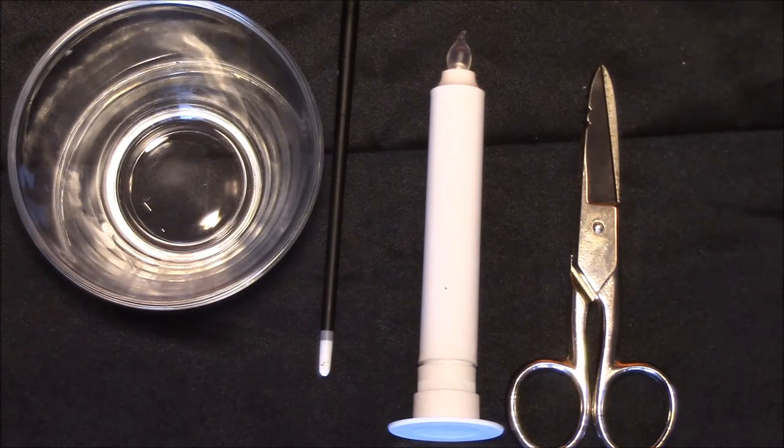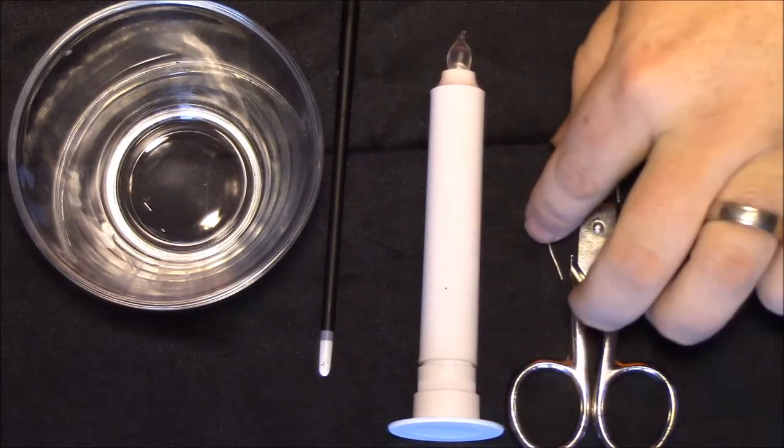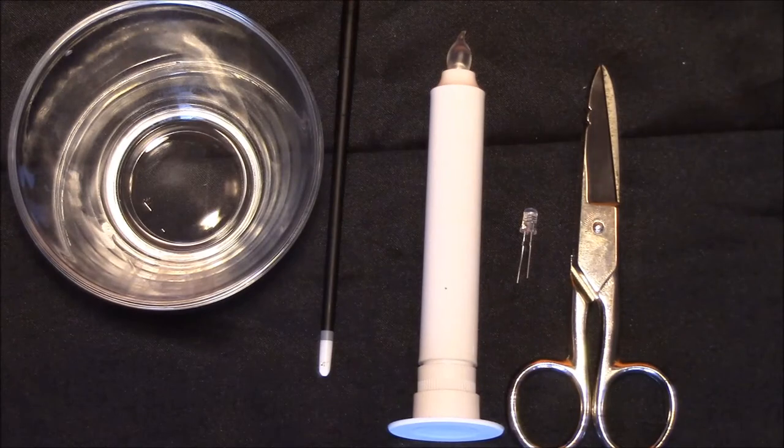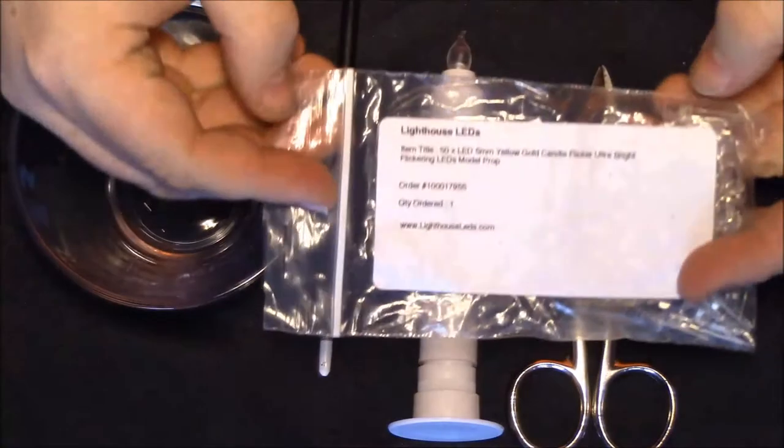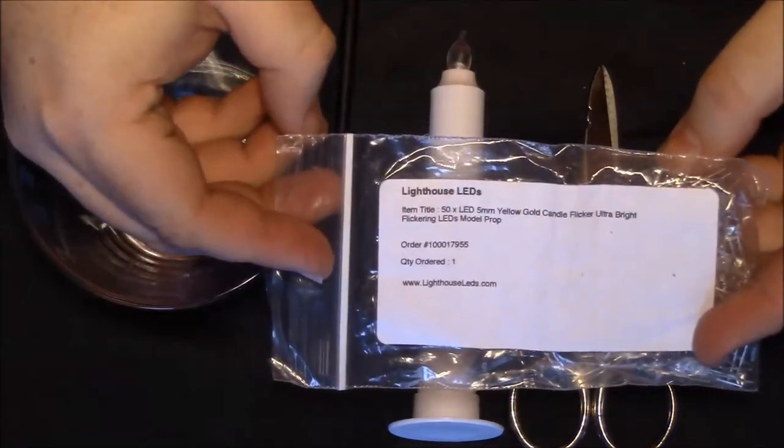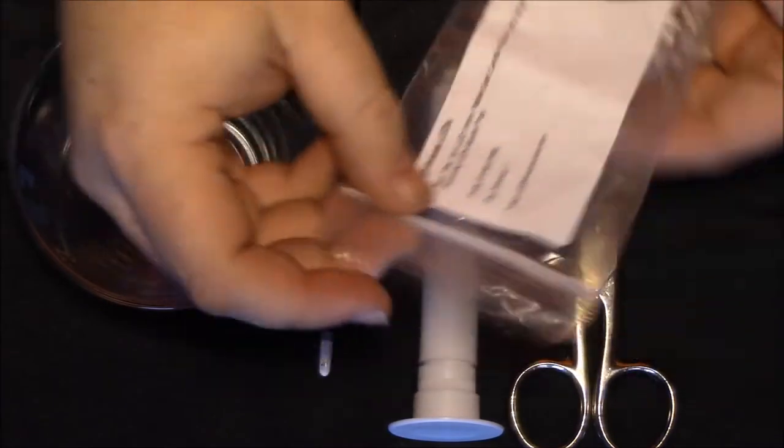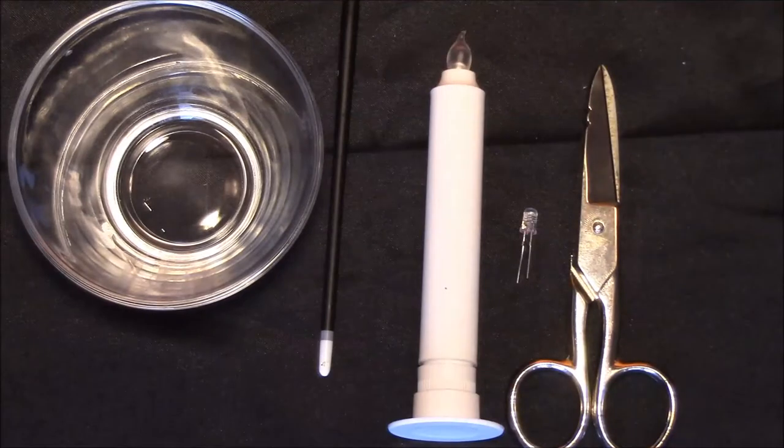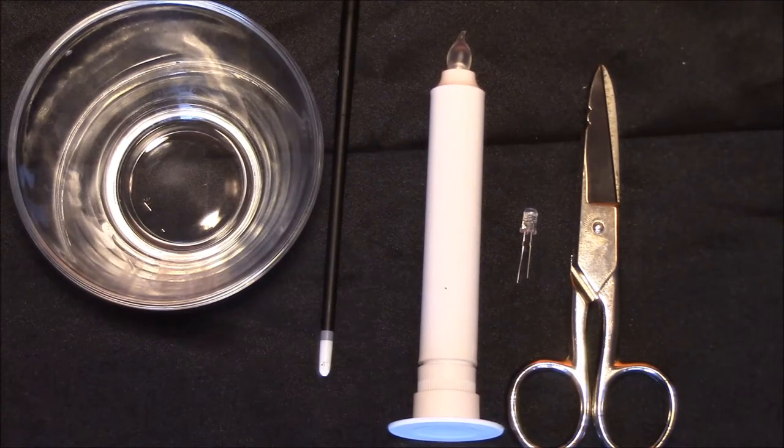Last thing you need is a 5mm, 3V flickering LED bulb. I get my LEDs, as a lot of haunters do, from a company called Lighthouse LEDs. This was a bag of 50 LEDs for about four or five dollars. You can get them on eBay as well, they come from China so it takes a little while. But you can usually pick up these LEDs for anywhere between five to eight cents per LED.